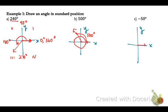For a negative 50-degree angle in standard position: start the initial side on the positive x-axis, then rotate clockwise and stop at about 50 degrees. That would be a negative 50-degree angle.